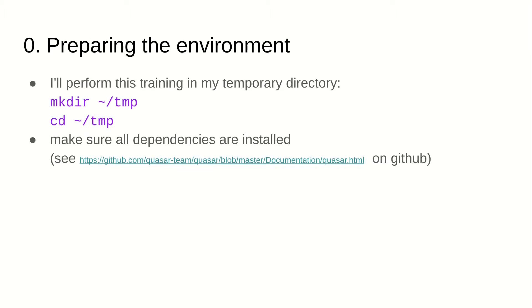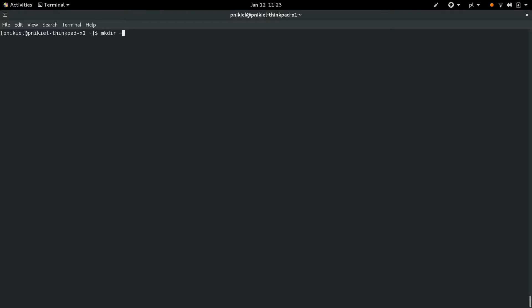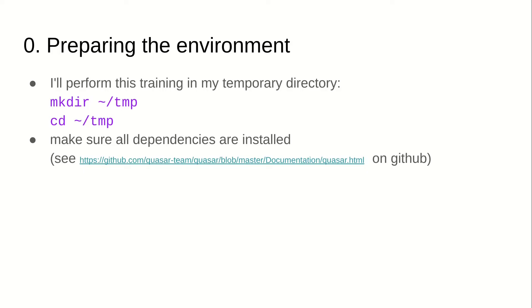I'll be keeping this hands-on demonstration alongside the slides. I'll try to perform the very same steps that you should perform when walking through this part, and the text in violet represents commands in Linux. First, I'll perform this training in my temporary directory. Then it would be great to make sure that all dependencies that Quasar needs are installed — so how do you learn about dependencies?